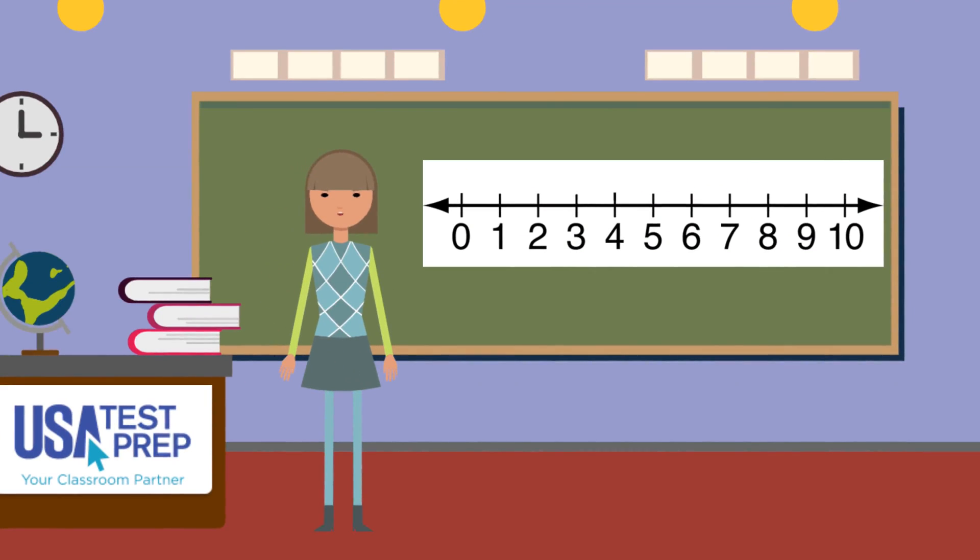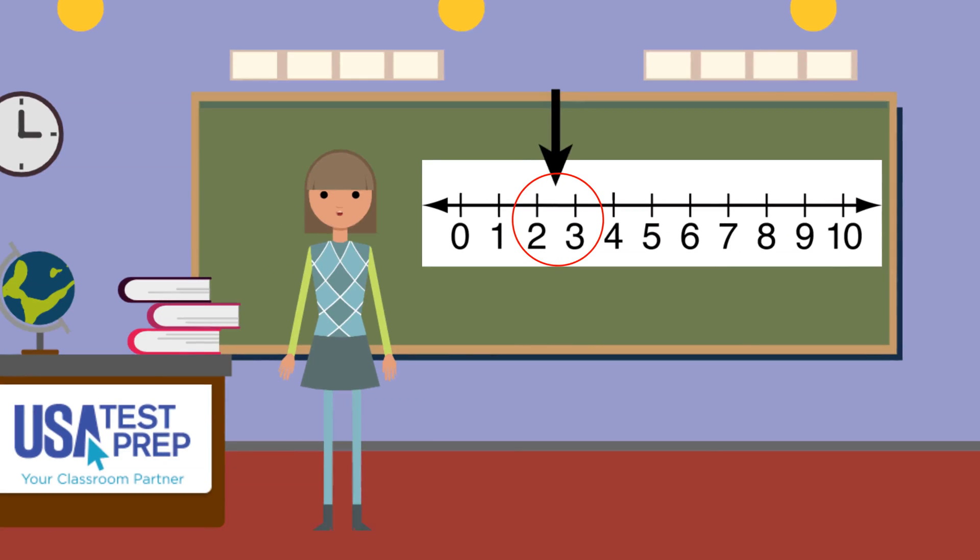Notice the numbers in the number line are equally spaced apart. The distance between 2 and 3 is the same length as the distance between 7 and 8.